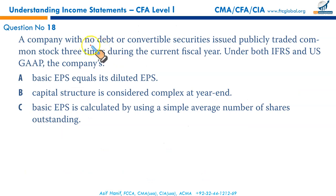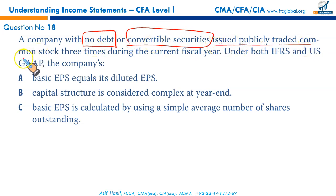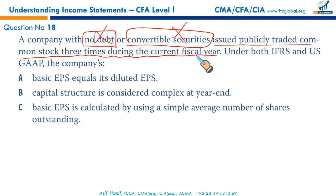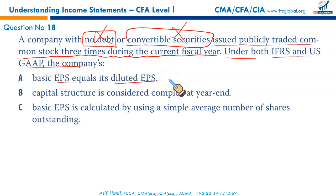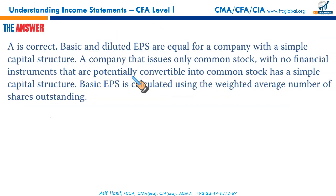A company with no debt, no convertible securities, and no anti-dilutive securities issued only common stock three times during the year. Under both IFRS and US GAAP, the company's basic EPS will equal diluted EPS because no financial instrument has the potential to convert into common stock — no convertible debt, no convertible preferred stock. That makes A the correct option.